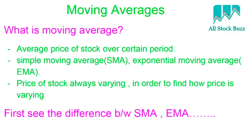Moving averages are simply the average price of a stock over a certain period — something you may have studied in school. There are two main types: simple moving average (SMA) and exponential moving average (EMA). While there may be other types, these two are sufficient to analyze stocks. Moving averages help you sense the direction of the price — whether it is moving upward or downward, whether it is in an uptrend or a downtrend.